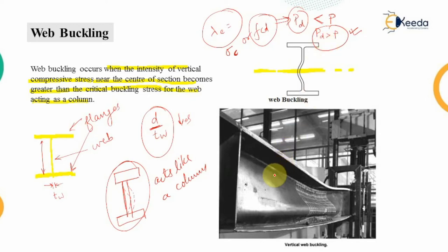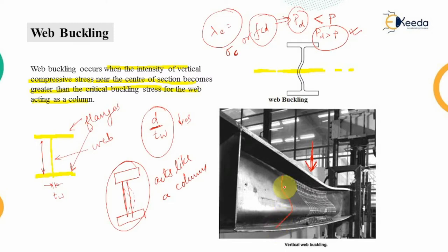As seen in the picture, this is a real image of a steel member subjected to vertical web buckling. Because of the heavy load at the top of this steel element, the mid-section portion has buckled — the middle portion of this I-section has buckled in a way that shows the web buckling phenomenon.